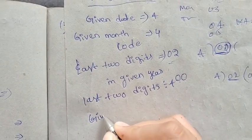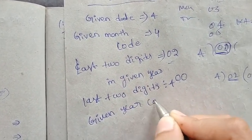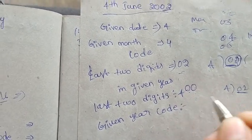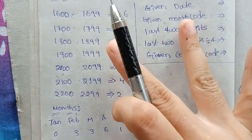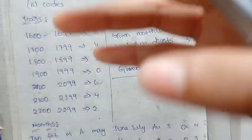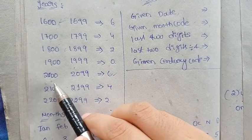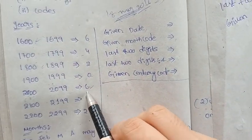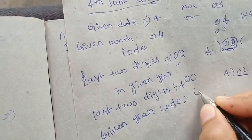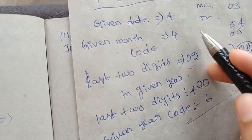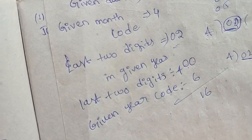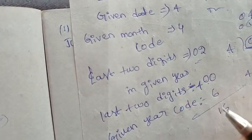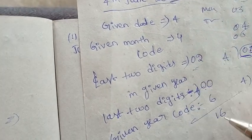Next component is the given year's century code. The given year is 2002. The century code is explained in the previous video. For the 2000s, the century code is 6. So our values are: date=4, month code=4, last two digits=2, century code=6. Adding these: 4+4+2+6 = 16. The answer so far is 16.